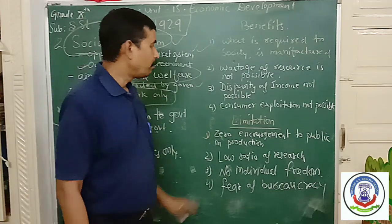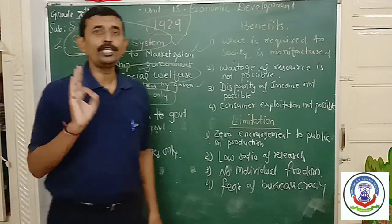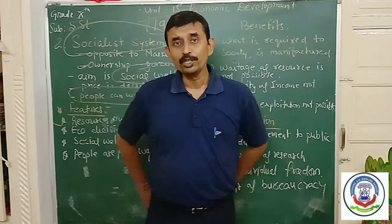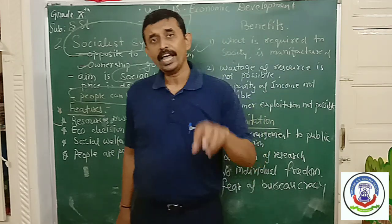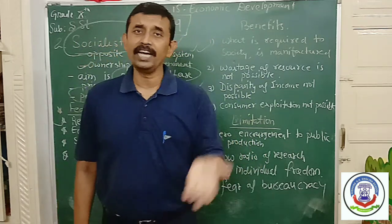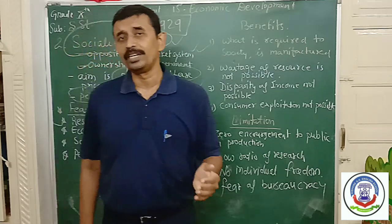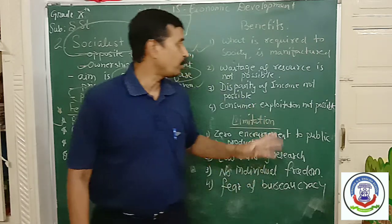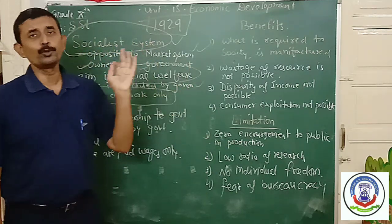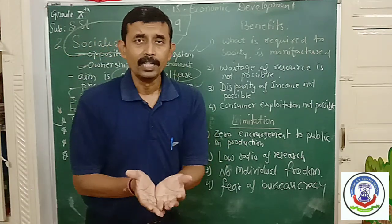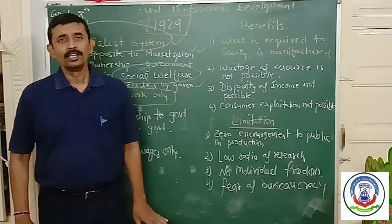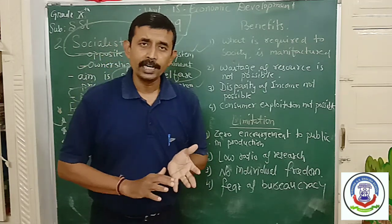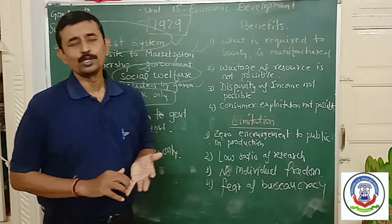The fourth and most important benefit is that exploitation of the consumer is not possible. Exploitation comes into existence when a person wants to get maximum profit — at that time they do not hesitate to cheat the consumer. But the main purpose of socialistic economy is social welfare; the government does not want to have any profit. So they provide good quality commodities at a very reasonable rate, and that is why exploitation of the customer is not possible.